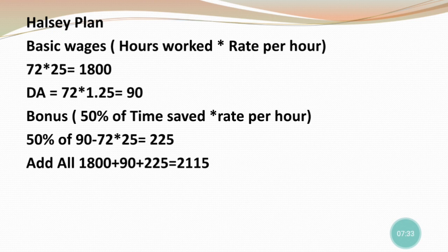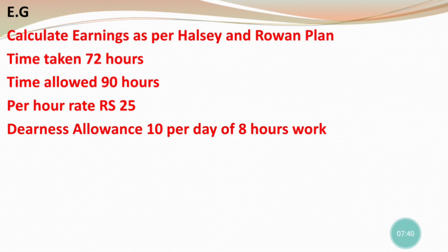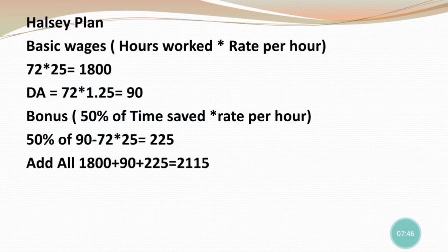Dearness allowance: 72 × 1.25. The 1.25 is obtained by dividing the daily DA rate by 8 hours to get the rate per hour. So DA = 72 × 1.25 = 90.